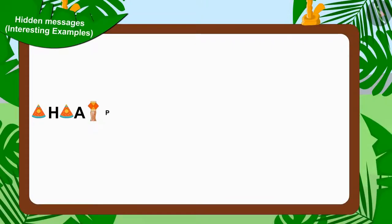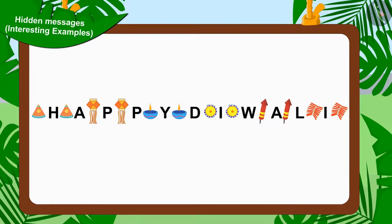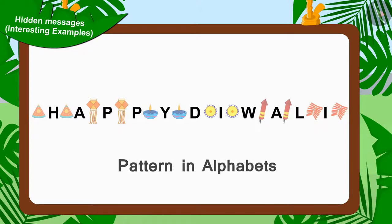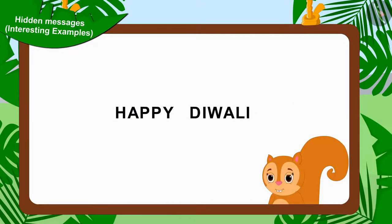The villagers together started solving this hidden message. Children, can you solve Jeev's hidden message? Well done, children, your answer is absolutely correct. The message is hidden in the form of one alphabet at a time in between these shapes. Chanda solved Jeev's hidden message by writing all the alphabets together.